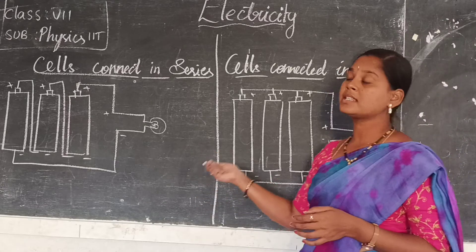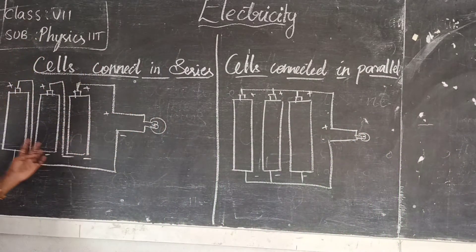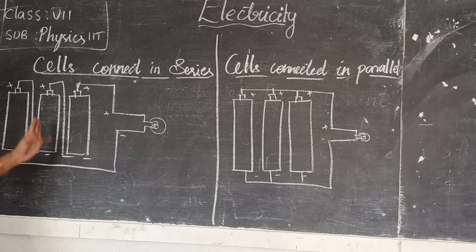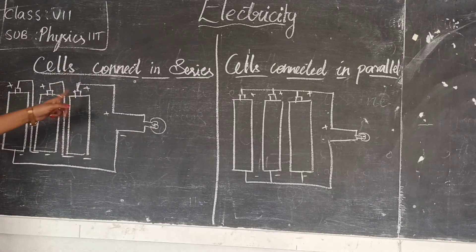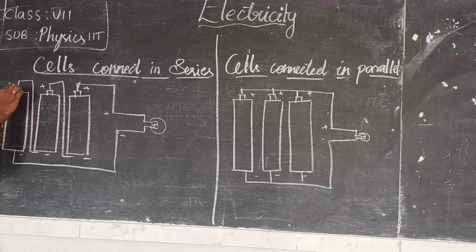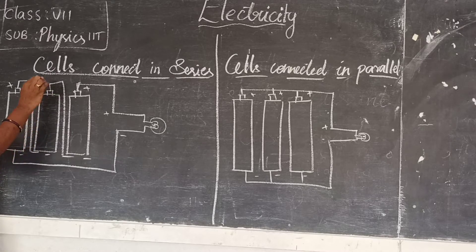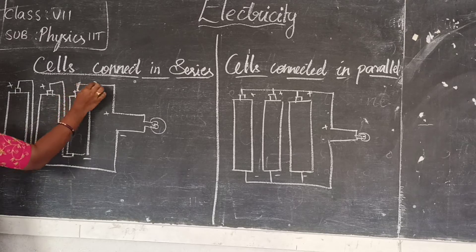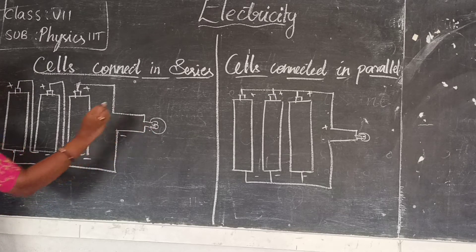Now we will be discussing cell circuit in series and cell circuit in parallel. We need to take 3 cells and connect them as well as a bulb. In series, the positive terminal of the 1st cell is connected to the negative terminal of the 2nd cell, and the positive terminal of the 2nd cell is connected to the negative terminal of the 3rd cell. The positive terminal of the 3rd cell is connected to the bulb, and the negative terminal of the 1st cell is also connected to the bulb.